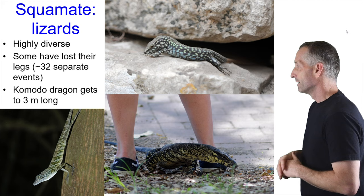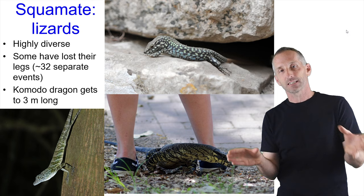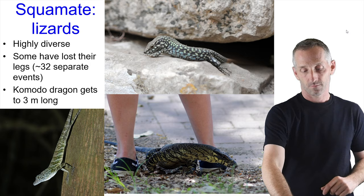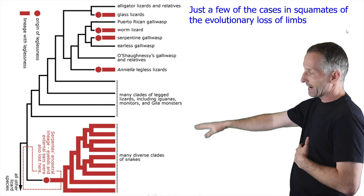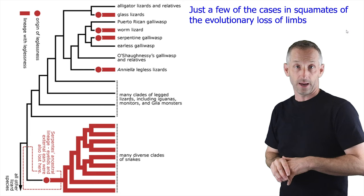One of the interesting things about lizards is that there are at least 32 separate evolutionary instances of the loss of legs. There are tons of legless lizards — if you grab something that looks like a snake, a lot of the time it's not a snake, because lots of different branches of reptiles have lost their legs. A recent phylogeny shows a bunch of instances in which squamates have lost their limbs, with snakes at the bottom having no limbs at all, except for small vestiges.